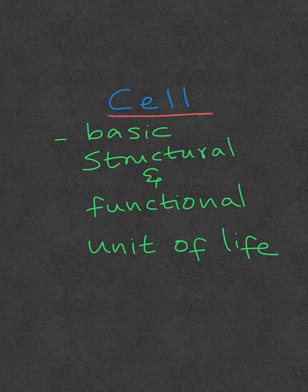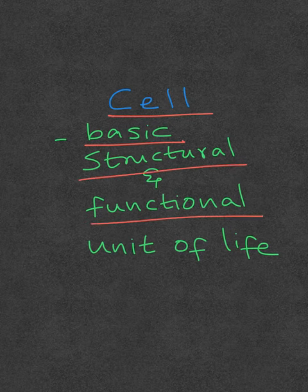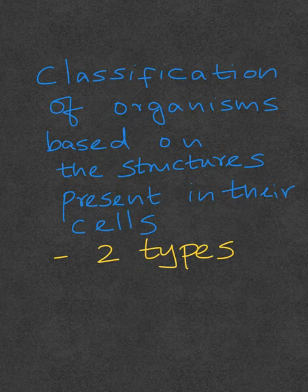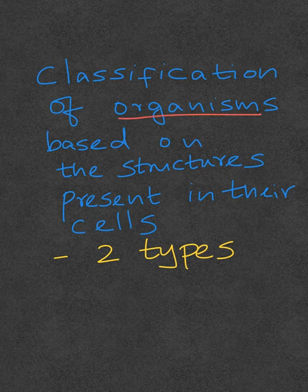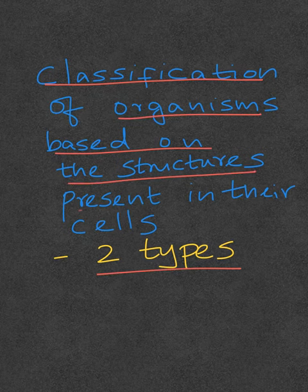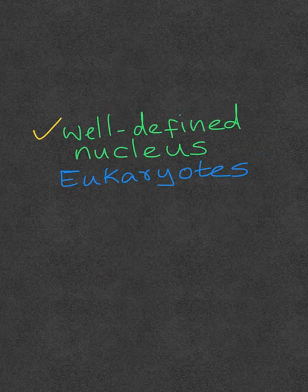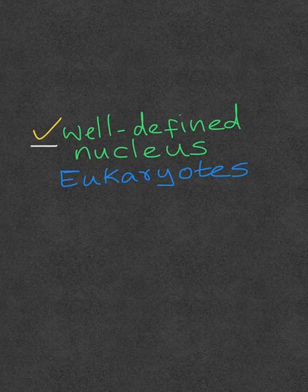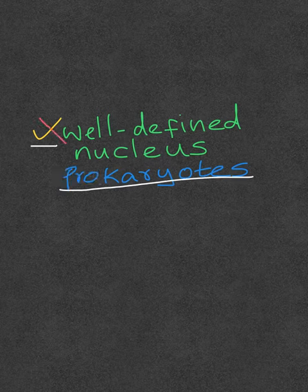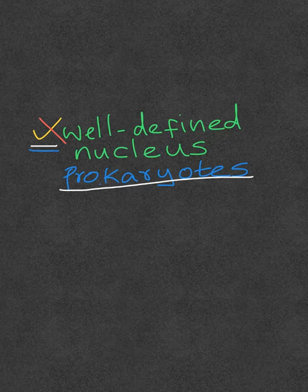A cell is the basic structural and functional unit of life. Organisms can be classified into two types based on the structures present in their cells. The organisms that have a well-defined nucleus are called eukaryotes, whereas those that do not have a well-defined nucleus are called prokaryotes.